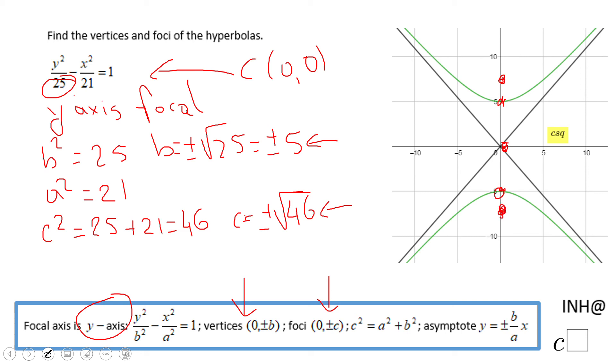If you notice, we have two lines here which are the asymptotes of this hyperbola. You can get the equation from this form: y equals plus or minus b over a, which is 5 over the square root of 21, times x.